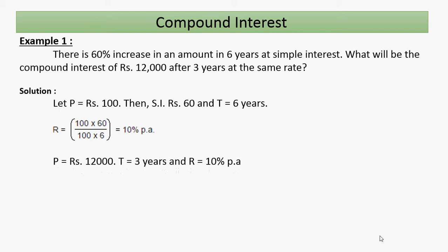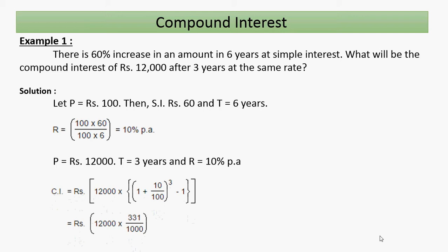Now the investment amount is rupees 12,000 for three years at a rate of ten percent. The formula for compound interest is: CI = P × [(1 + R/100)^n − 1]. Here P is 12,000, n is three years, and rate is ten percent.